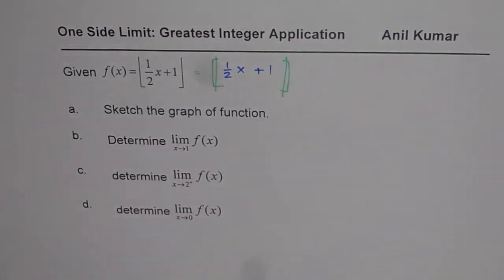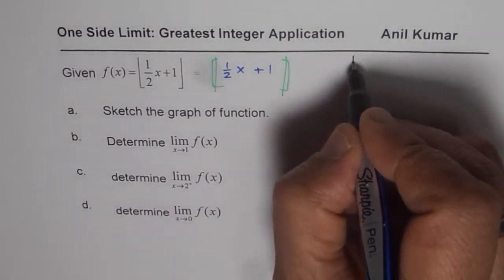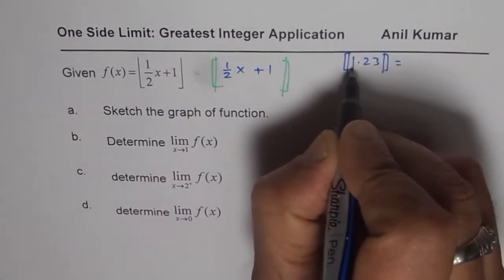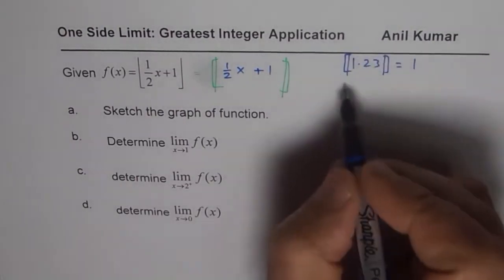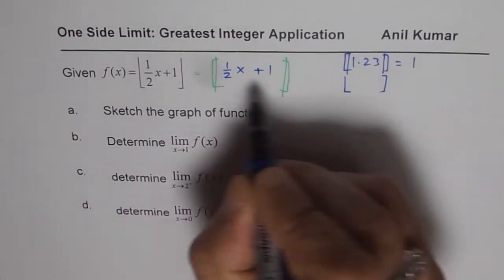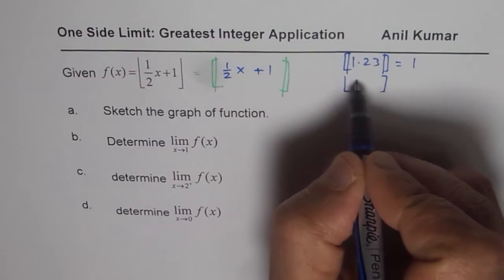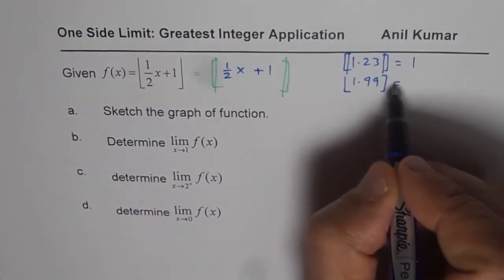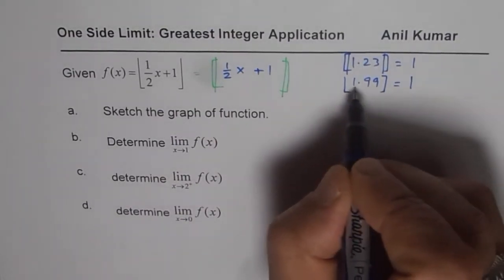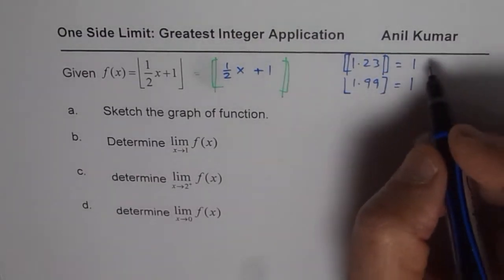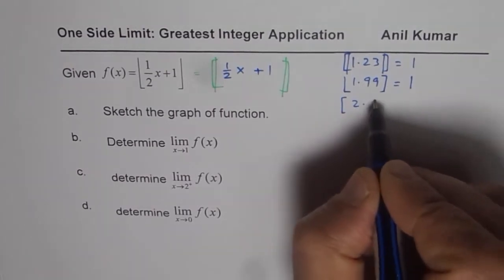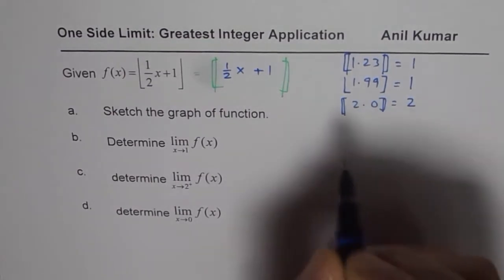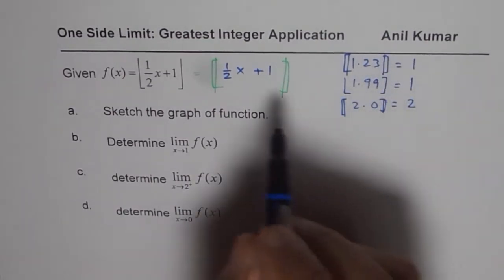The greatest integer function means that given a number, we take the floor — the bottom integer value. For example, the greatest integer of 1.23 is 1. Even for 1.99, the greatest integer is still 1. However, for 2.0, the greatest integer is 2.